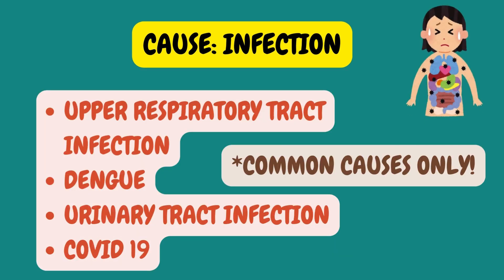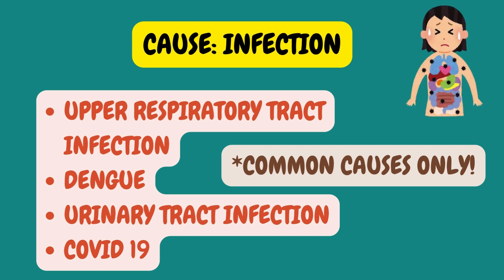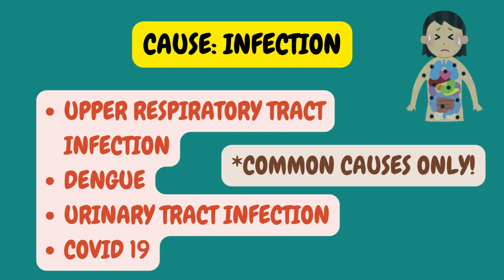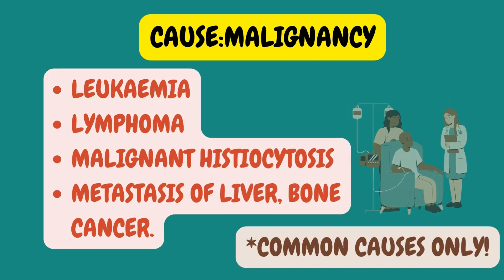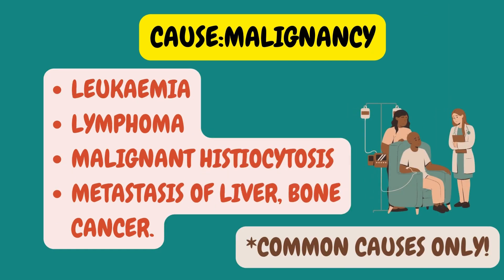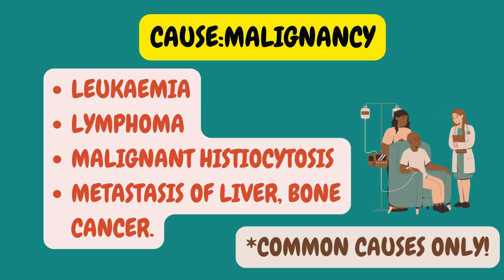Under the infection category, examples include upper respiratory tract infection, urinary tract infection, or COVID-19. Under malignancy, you can think of leukemia, lymphoma, malignant histiocytosis, or metastasis of liver and bone cancer.